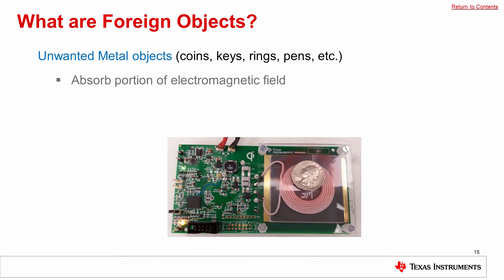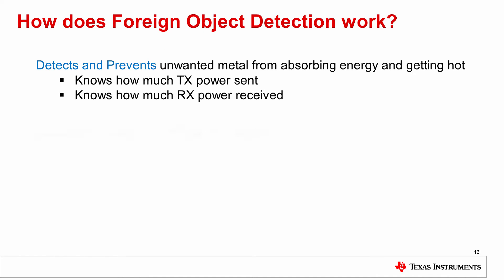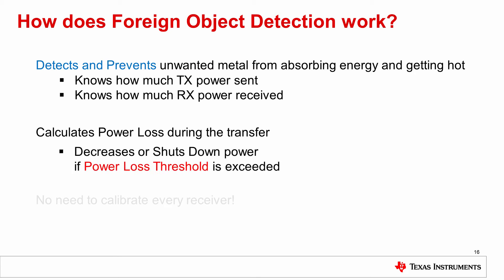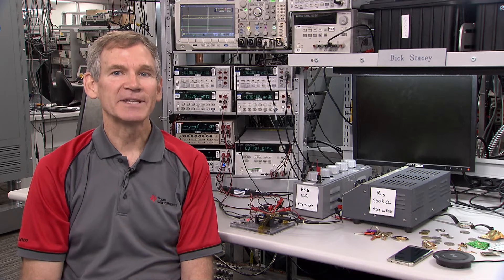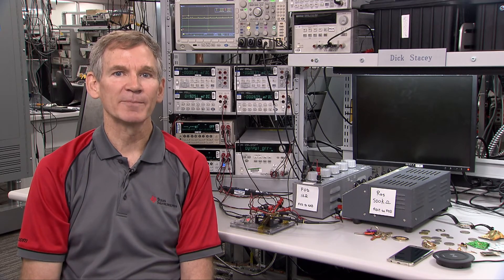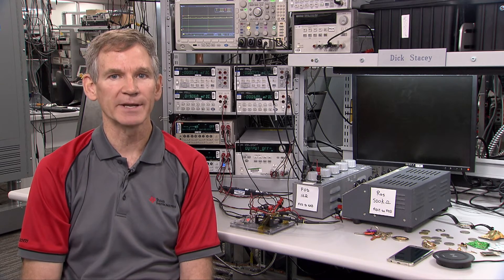The wireless system may be able to determine if there's a foreign object present by comparing the received power reported to the transmitter with the actual transmitted power. If this delta becomes too large, there is something in the area absorbing the excess transferred power. Once a preset threshold for maximum allowable power loss is reached, the transmitter is required to prevent the object from increasing past a given temperature threshold. In general, the transmitter will stop power transfer and set an error flag. Many TI transmitters will decrease the power being sent in an attempt to keep within an acceptable level in order to continue power delivery without creating excessive power losses.